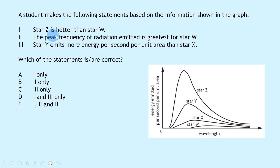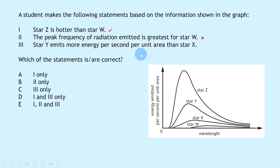Statement 1 is true — curves higher on the graph correspond to higher temperatures, so Z is hotter than W. Statement 2 is false — greatest peak frequency requires the lowest peak wavelength, which belongs to star Z, not W. Star W actually has the lowest peak frequency. Statement 3 is true — star Y has a greater area under the curve than X, meaning it emits more energy per second per unit area. So statements 1 and 3 are correct, giving answer D.